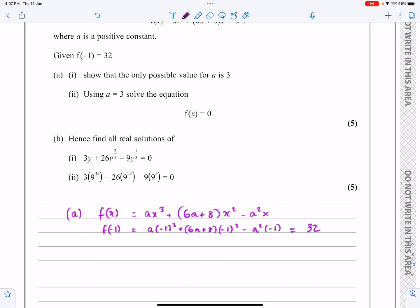So let's just multiply everything out. I'm going to get minus a, I'm going to get plus 1, so I'm going to get plus 6a plus 8. And then I'm going to get the minus and the minus cancelling there to make plus a² equals 32.